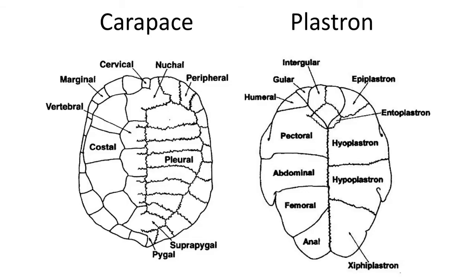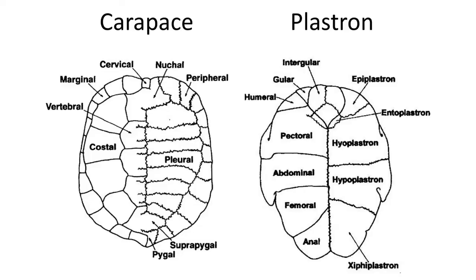Turtles have two shells which enclose their skeleton. The shells are composed of ossified bone covered in a protective keratin sheath, which protects the bony shell like a fingernail. The top or dorsal shell is called the carapace, and the bottom or ventral shell is called the plastron.